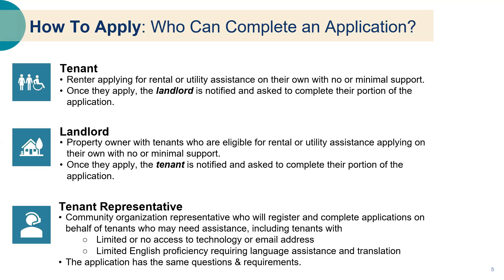These are the categories of people who can fill out an application: tenants, landlords, and tenant representatives. For all applications, information from both tenants and landlords is required. However, in situations where landlords refuse to cooperate, tenants can still submit an application and receive assistance if eligible. When a tenant applies on the online portal, their landlord will be notified and asked to complete their section of the application. If a landlord applies, the tenant will be notified and asked to complete their portion.